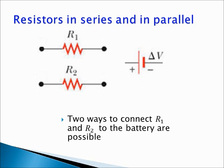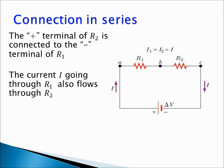If we now have two elements, let's say resistors R1 and R2, and we wish to connect them to an external circuit — let's say a battery with EMF ΔV — you can figure out two ways to connect R1 and R2. In the first type of connection, called connection in series, you connect the two elements sequentially. This means that the plus terminal of R1 is connected to the plus terminal of the battery, the plus terminal of R2 is connected to the negative terminal of R1, and the negative terminal of R2 is connected to the negative terminal of the battery. In this arrangement, the current I that goes through R1 will also flow through R2.